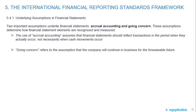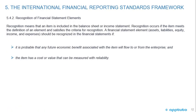Two important assumptions underlie financial statements: accrual accounting and going concern. Accrual accounting assumes financial statements should reflect transactions in the period when they actually occur, not necessarily when cash movements occur. Going concern refers to the assumption that the company will continue in business for the foreseeable future. Recognition means an item is included in the balance sheet or income statement. A financial statement element should be recognized if it is probable that future economic benefits will flow to or from the enterprise, and the item has a cost or value that can be measured with reliability.